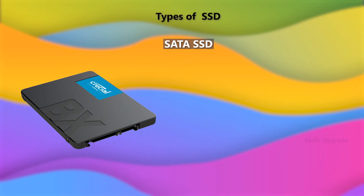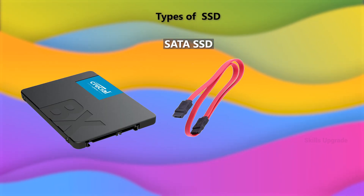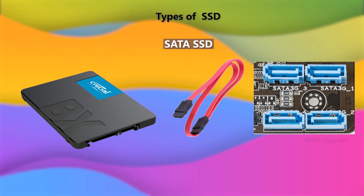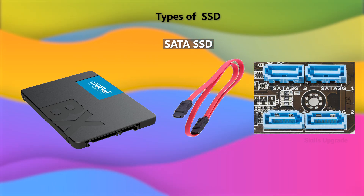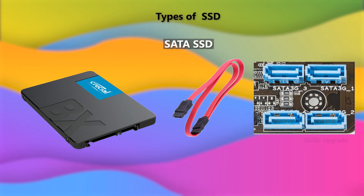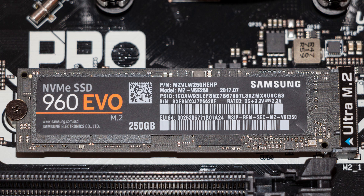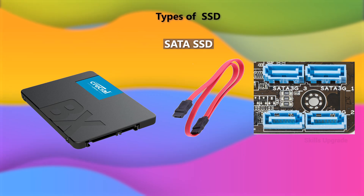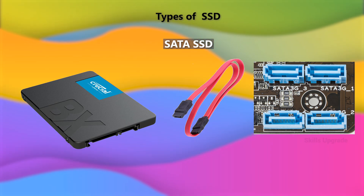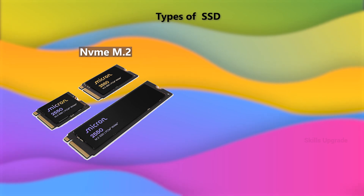With SATA SSD, we have a cable connected to the board. But with NVMe, the SSD has a direct connection to the board. The normal SATA SSD speed will be changed — NVMe is called the M.2 interface type.